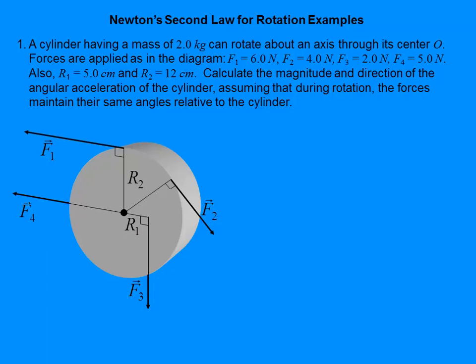This is a basic torque and angular acceleration problem, which means we need to apply Newton's Second Law, which says that the net torque is equal to the angular acceleration times the rotational inertia — torque equals I-alpha. In this case, we've got four forces, which would lead to four torques.